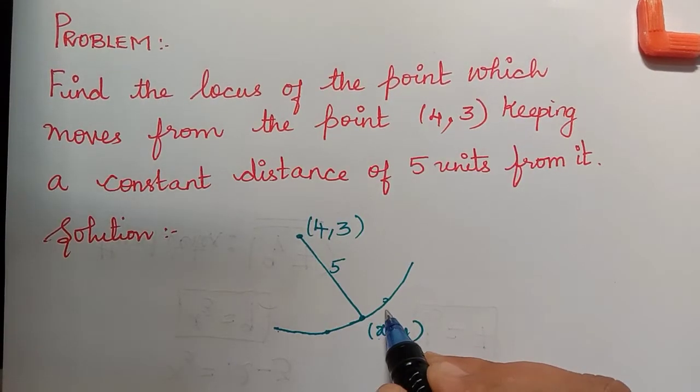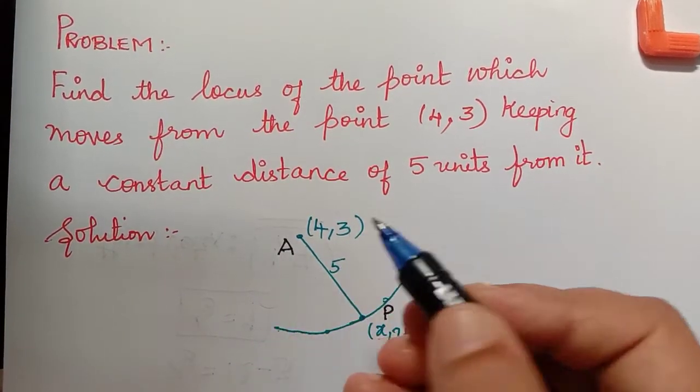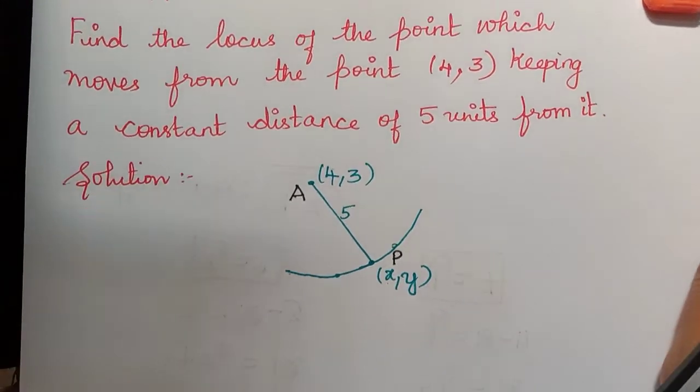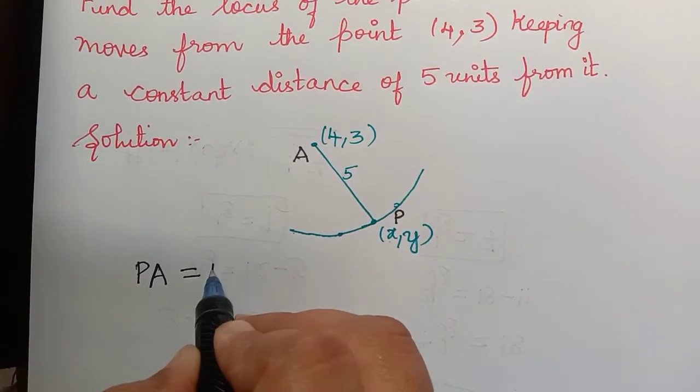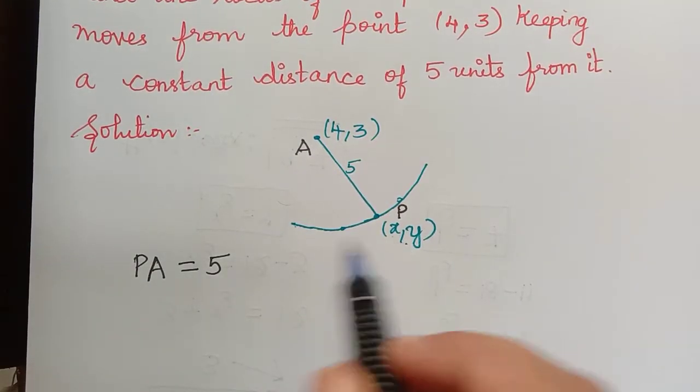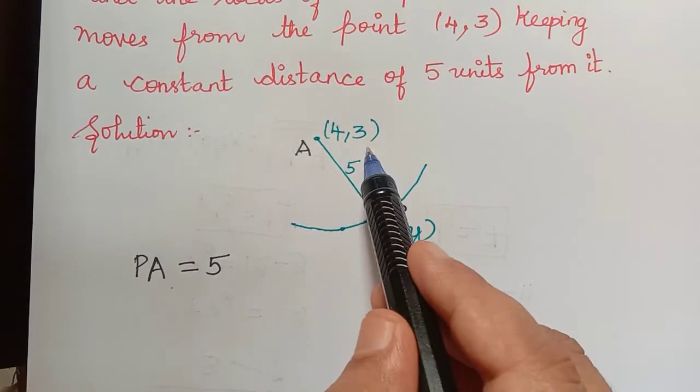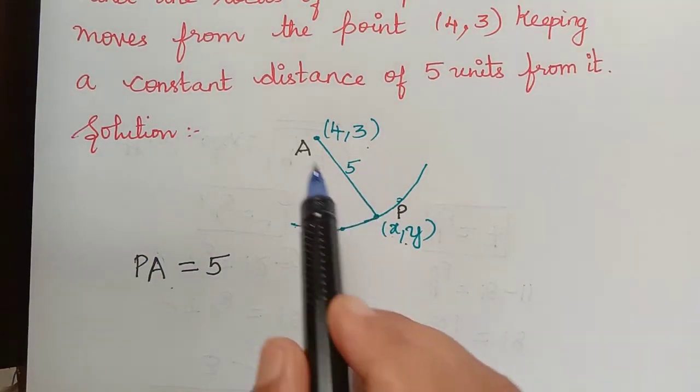So we shall take this point as P and this point as point A. So now it is given that PA is equal to 5 units. Now the point P is (x,y), point A is (4,3). So now we have to find PA, that is the distance PA.